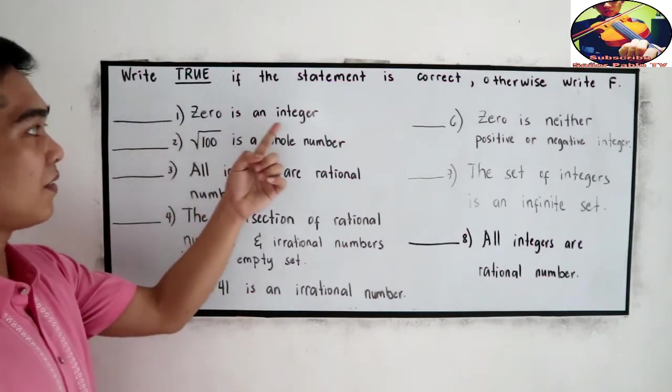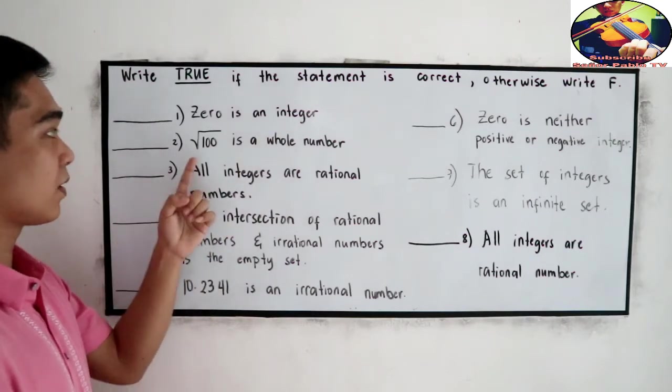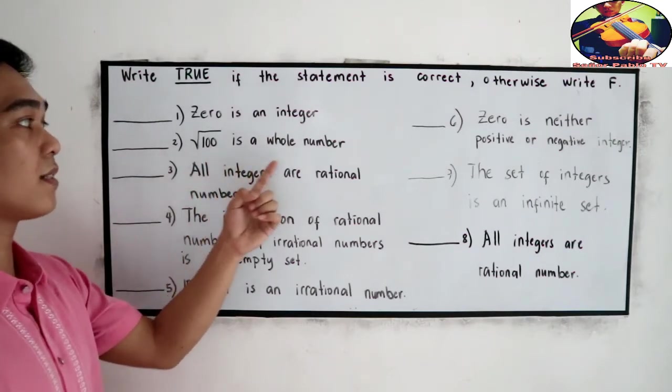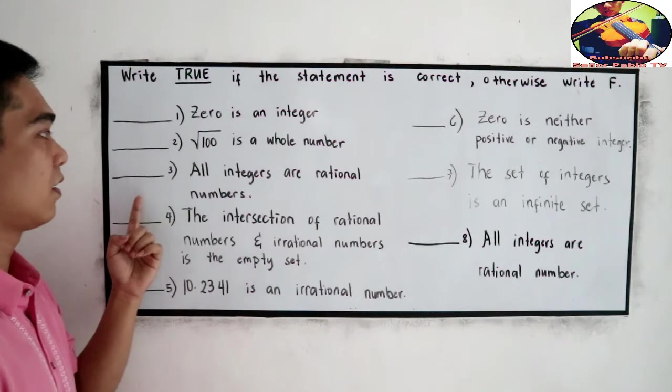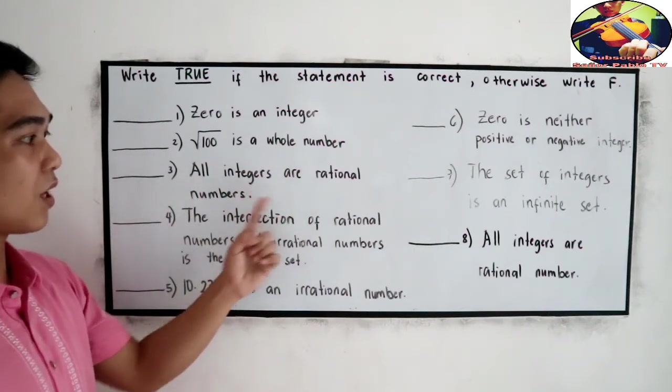Zero is an integer. Number 2, the square root of 100 is a whole number. Number 3, all integers are rational numbers.